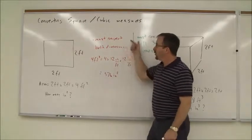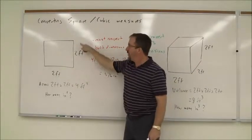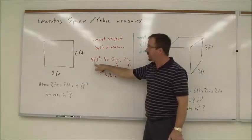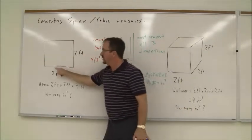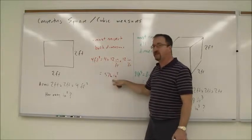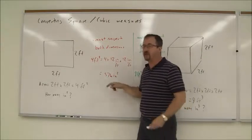We have to convert both dimensions. So we have to convert feet to inches this way and feet to inches this way. So 4 square feet equals 4 times 12 inches per foot this way, times another 12 inches per foot that way, which gives us 576 square inches.